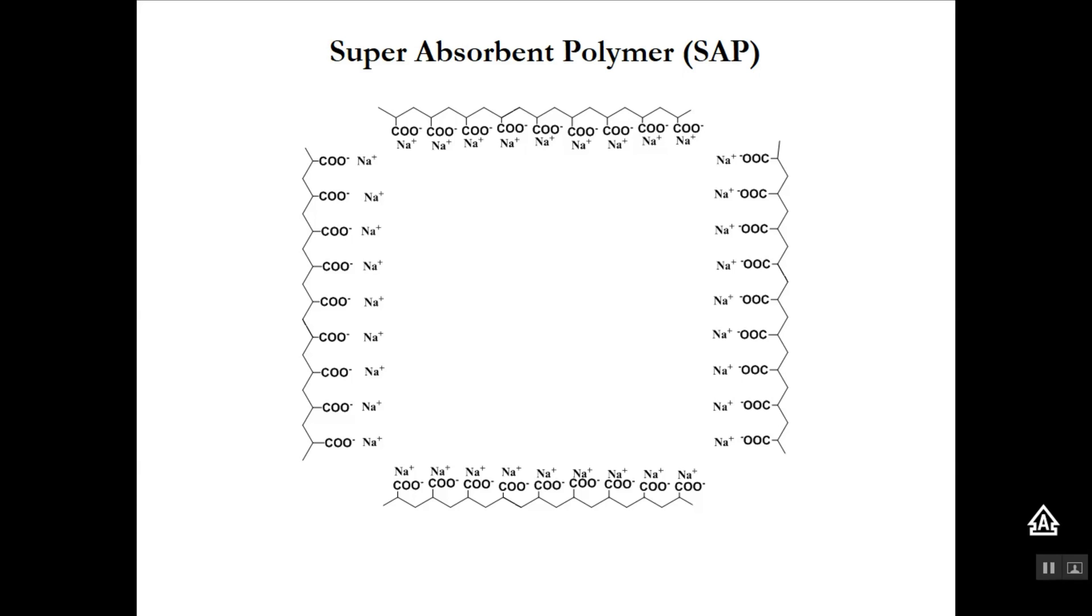Notice that each polymer strand has a lot of carboxylate groups. One of these is indicated by the arrow. These carboxylate groups strongly attract water molecules through hydrogen bonding and ion-dipole forces. The vast number of carboxylate groups on each polymer strand makes sodium polyacrylate very good at absorbing water.